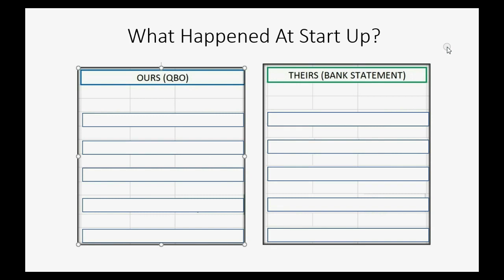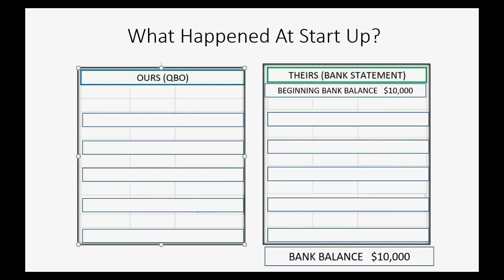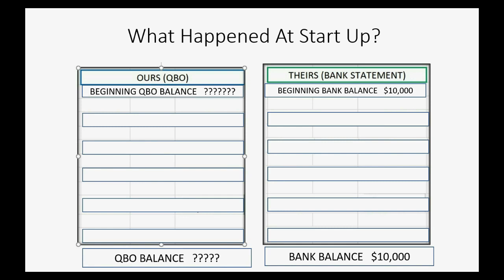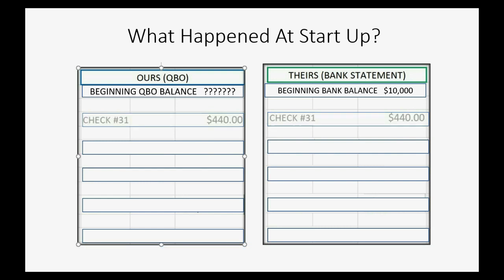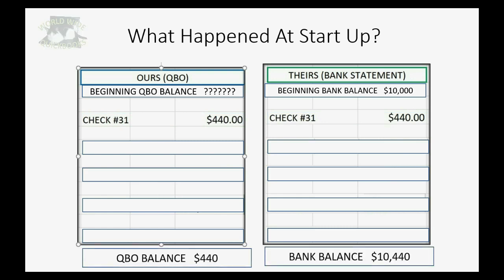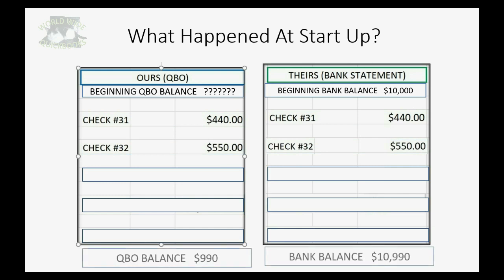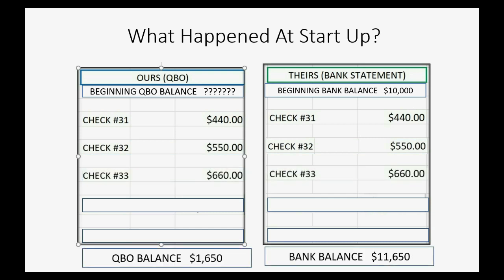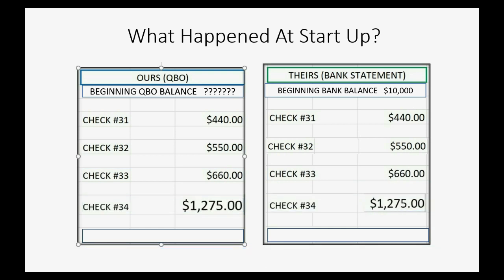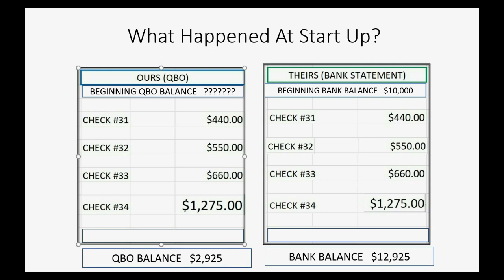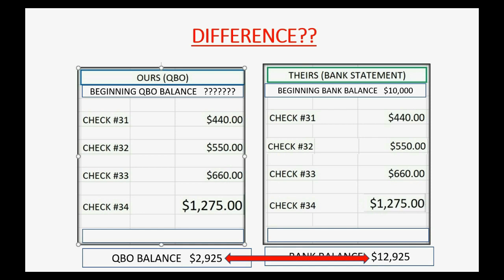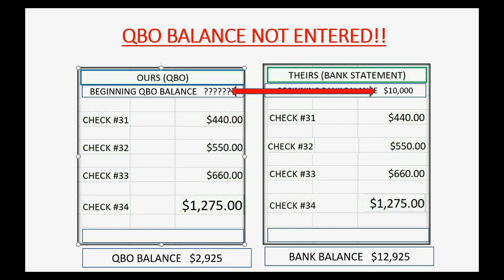So let's look at what happened at start-up. We knew when we started using QuickBooks what the bank balance was, because it was listed clearly on the statement. But we could not know what the book balance would have been, because we just started using QuickBooks. We proceeded to record every transaction from the bank statement properly in QuickBooks, but unfortunately the balance was never the same because we never started with the same number. When we go to reconcile, there's a big difference between the book balance and the bank balance, caused by the beginning balance that was never entered into QuickBooks Online.